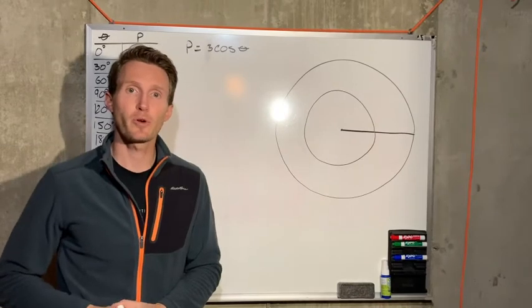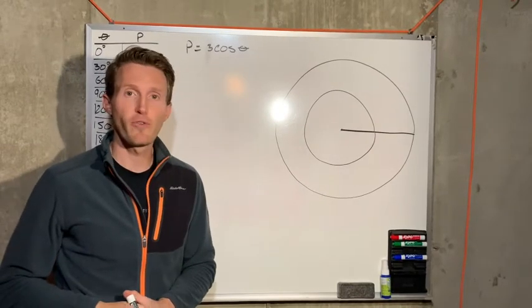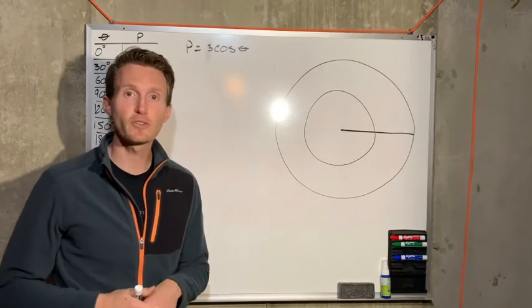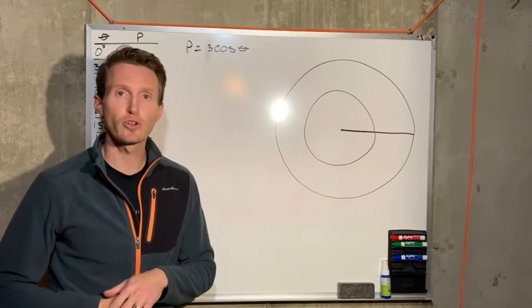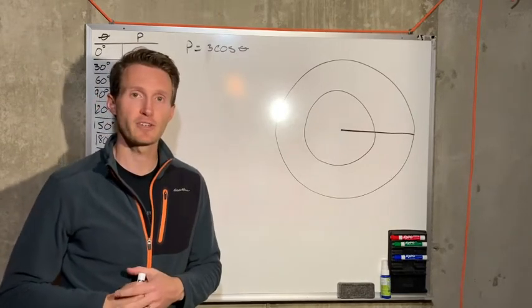Okay, this will be a quick review for PreCal. This is quiz 44. You have two questions on this quiz. Both of them are going to be polar coordinate graphing.